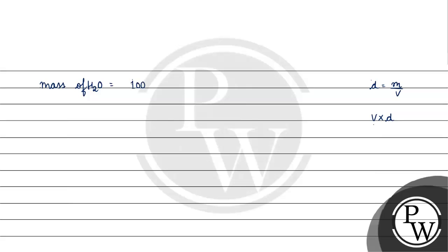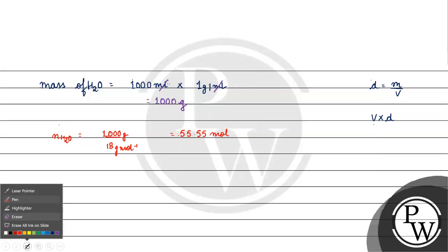1 liter is 1000 mL. The density of water is 1 gram per mL. So mass equals volume times density, which gives 1000 grams of water. The number of moles of water equals mass divided by molecular mass. The molecular mass of water is 18 grams per mole, so the number of moles of water is 55.55 moles.